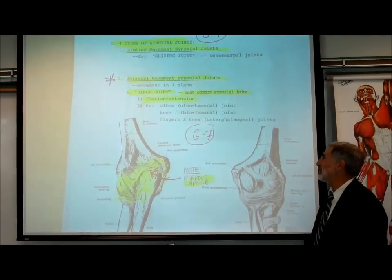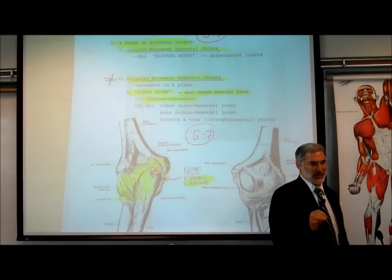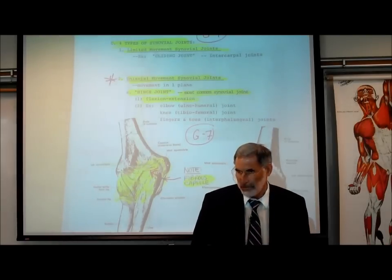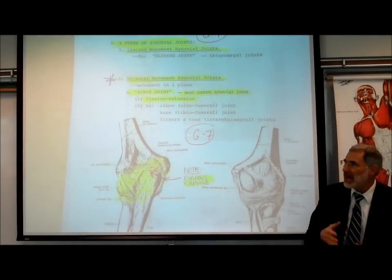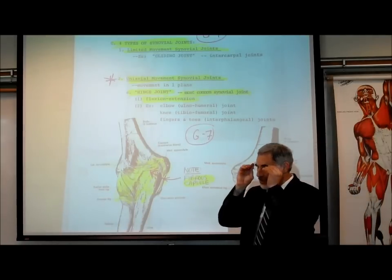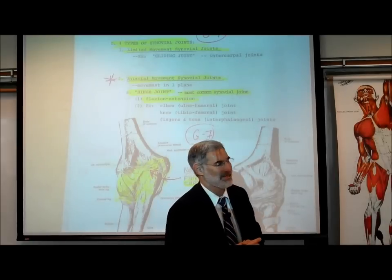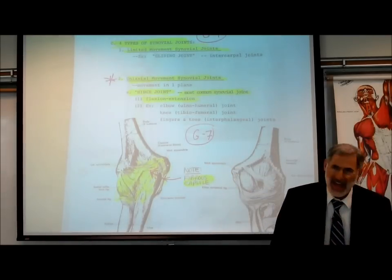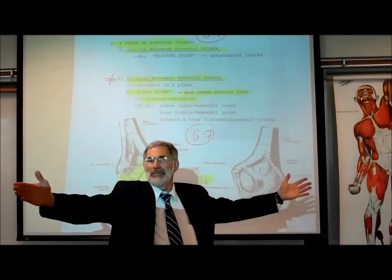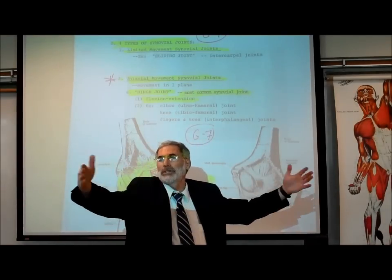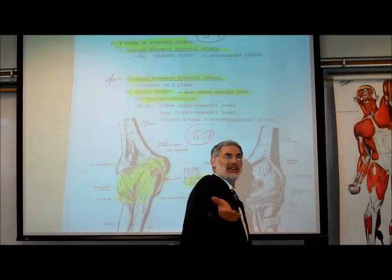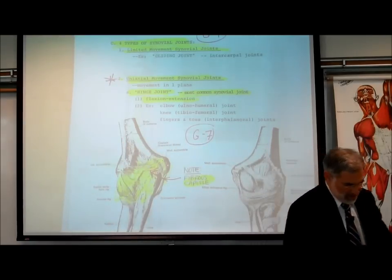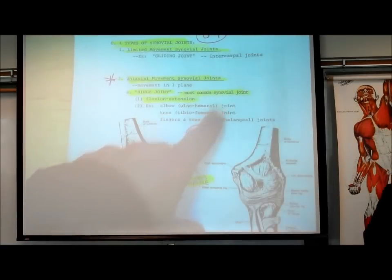The second category is a big deal: uniaxial movement synovial joints. By definition, they allow movement in one axis or plane. There are two types. The first are hinge joints, which allow flexion and extension — movement along one axis or plane. They get the nickname 'hinge joint' because, like a door swings open and shuts, your arm moves at your elbow or your lower leg moves at your knee. These are the most common of all synovial joints.